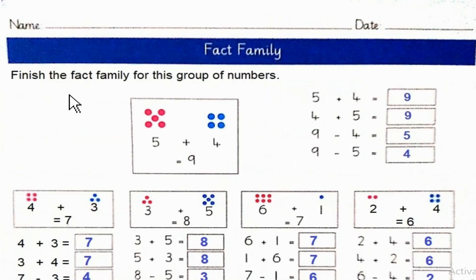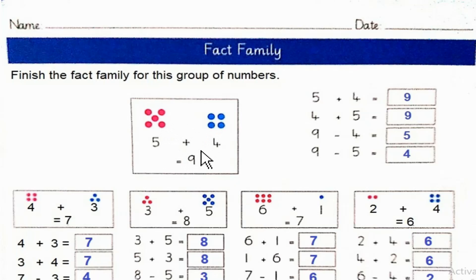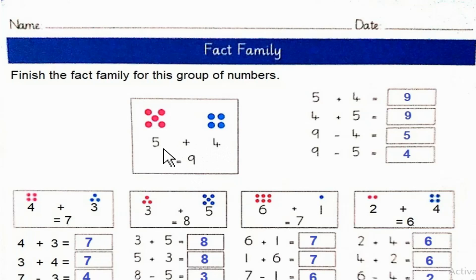Fact family: Finish the fact family for this group of numbers. 5 plus 4 is equal to 9, or 4 plus 5 is equal to 9. Similarly, if you subtract 5 from 9 you get 4, and if you subtract 4 from 9 you get 5.